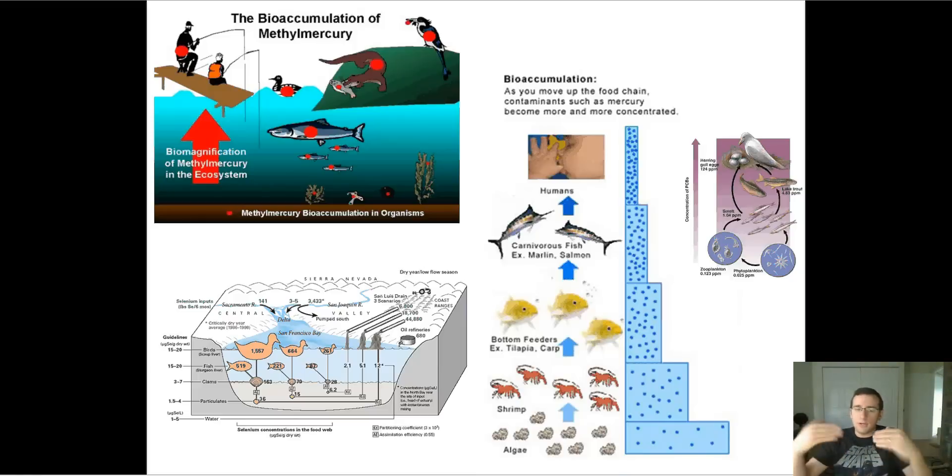Now you get to the carnivorous fish, even more concentrated. And by the time you get to the human that is eating that carnivorous fish, it's even more concentrated. So that means that as you go up the food pyramid, the toxins magnify. The higher the level of the food pyramid, the more concentration of toxins is going to exist in the ecosystem.